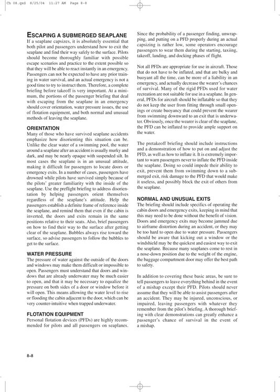The briefing should include specifics of operating the cabin doors and emergency exits, keeping in mind that this may need to be done without the benefit of vision. Doors and emergency exits may become jammed due to airframe distortion during an accident, or may be too hard to open due to water pressure. Passengers should be aware that kicking out a window or the windshield may be the quickest and easiest way to exit. Because many seaplanes come to rest in a nose-down position due to the weight of the engine, the baggage compartment door may offer the best path to safety. Tell passengers to leave everything behind in the event of a mishap except their PFD. Pilots should never assume they will be able to assist passengers after an accident, as they may be injured, unconscious, or impaired. A thorough briefing with clear demonstrations can greatly enhance a passenger's chance of survival in the event of a mishap.